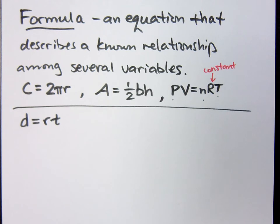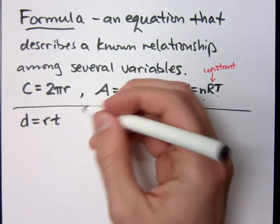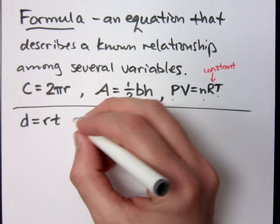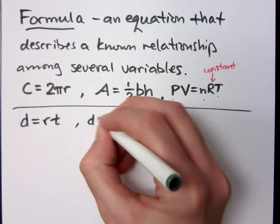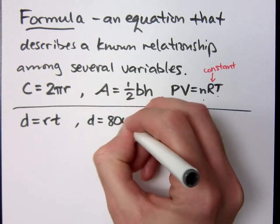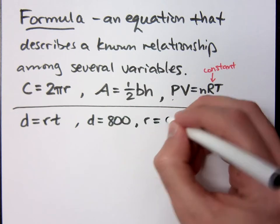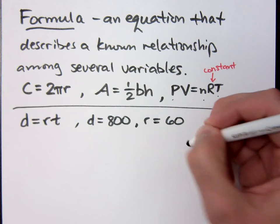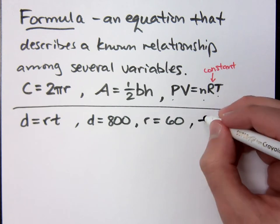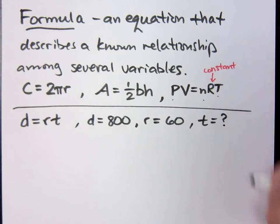When I think about driving to my parents' house, my parents live about 800 miles away. If my average rate of speed can be 60 miles per hour, how long should I plan to drive there? Can I figure that out?